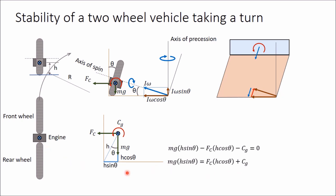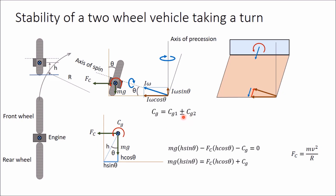Here, m is mass of the vehicle, g is acceleration due to gravity, h is height of center of gravity from the road surface in vertical position, and theta is angle of heel. fc is centrifugal force calculated as mv²/R, where v is velocity and R is radius of rotation. Cg is the total gyroscopic couple equal to Cg1 ± Cg2, where Cg1 is the gyroscopic couple due to the two wheels and Cg2 is due to the engine. We assume the engine axis and wheel axis are parallel. We use the plus sign when the sense of rotation of the engine and both wheels is the same; if different, use the negative sign.